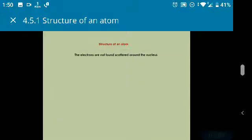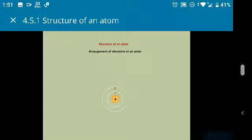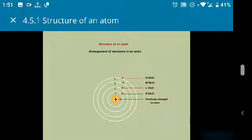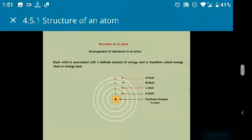The electrons are not found scattered around the nucleus. They are arranged in different shells around the nucleus as seen here. Each orbit is associated with a definite amount of energy and is therefore called energy shell or energy level. These energy levels are numbered starting from nucleus outward as 1, 2, 3, 4, and so on, or named as KLMN, and so on.